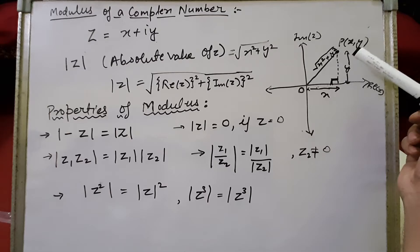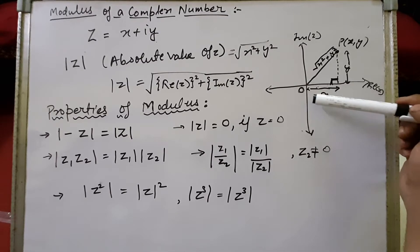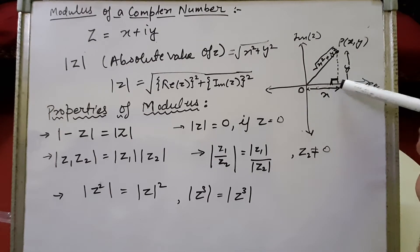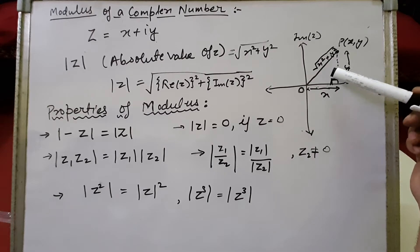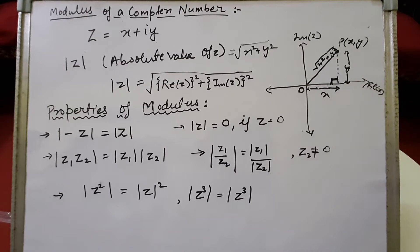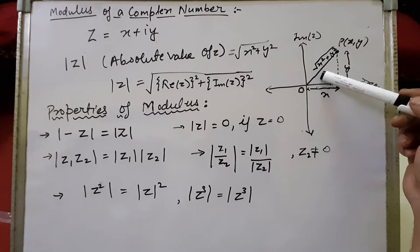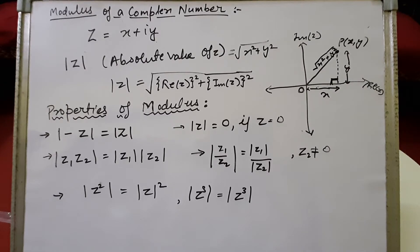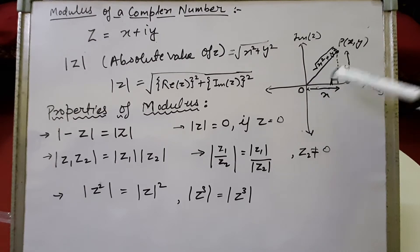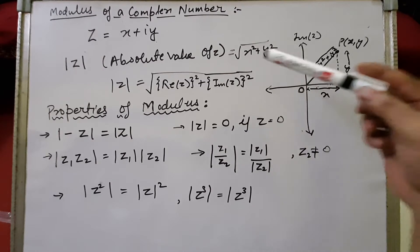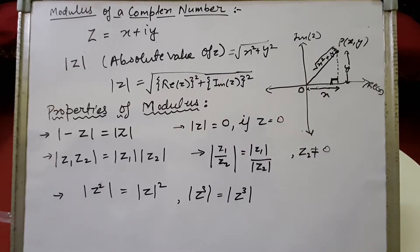The mod of z is the distance OP. We have a right angle triangle where we calculate the length of the hypotenuse. The length of the hypotenuse is under root of perpendicular squared plus base squared, so the length of OP will be under root x squared plus y squared. This OP, which is the distance of the point from the origin, is the modulus of the complex number z.